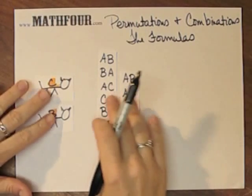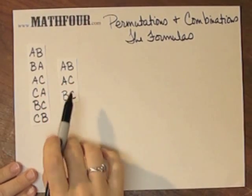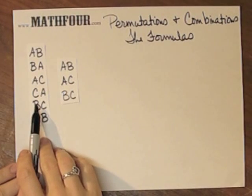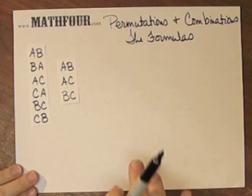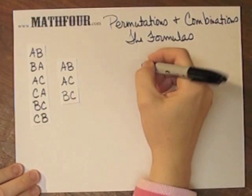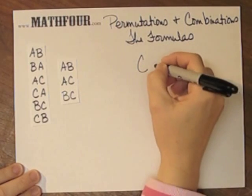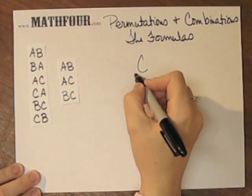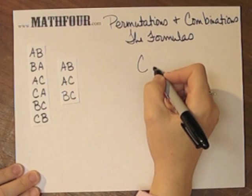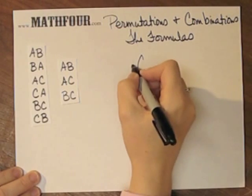So this is why this combination and this permutation have just slightly different formulas. So the formula for combination is, we can write it a number of different ways.